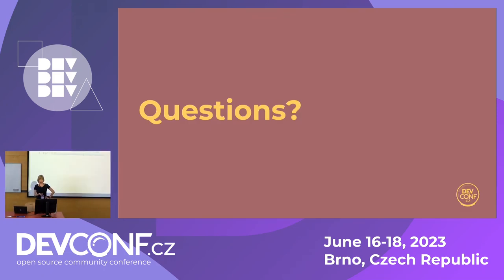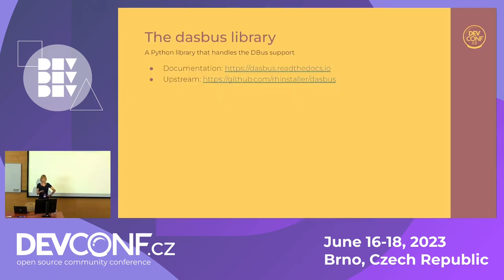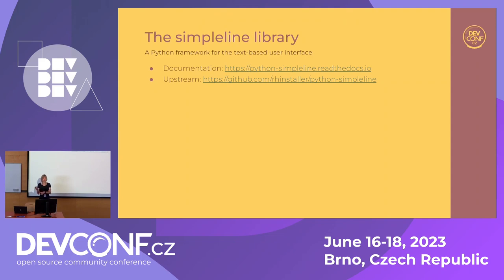That's all from me. One of the side effects of this work was that we created some new libraries. We have the DustBus library for DBus communication. There's also another library called SimpleLine, which is a simple Python framework for text-based user interfaces. Because we don't have only a graphical UI — we also have a text-based UI — and because of some weirdness with S390, we couldn't use existing libraries. So this was separated code that used to be in Anaconda for a long time. We cleaned it up and created a completely new library that's independent of Anaconda, so you can use it if you're interested.